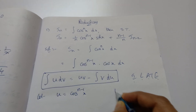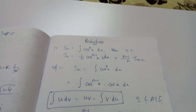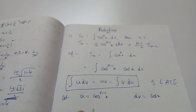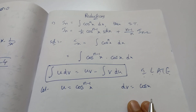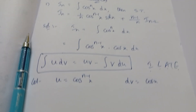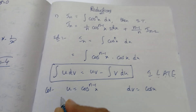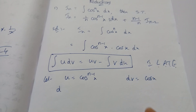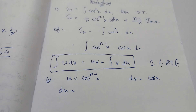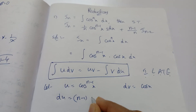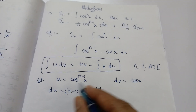Let u = cos^(n-1) x and dv = cos x dx. Remember: the first function always gets differentiated (du) and the second function gets integrated (v). So du: applying the power rule, d/dx of cos^(n-1) x gives (n-1) · cos^(n-2) x, then we need the derivative of cos x.